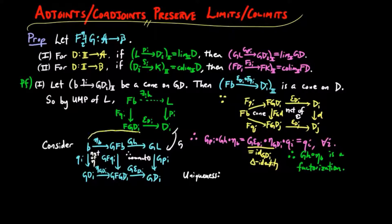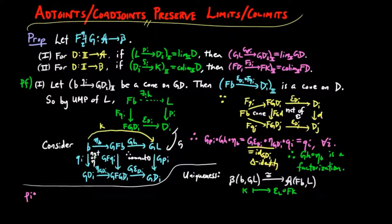Since FG is in an adjoint situation, there exists this isomorphism of hom-sets. So if k is another factorization, it gets mapped to εL∘Fk by the definition of the isomorphism. For each i, post-composing by the projection πi gives us πi∘εL∘Fk.